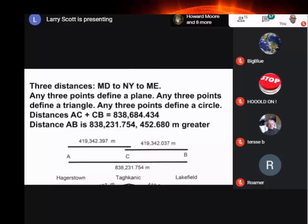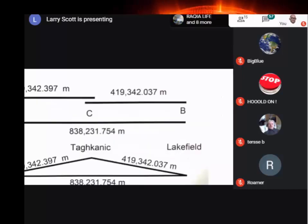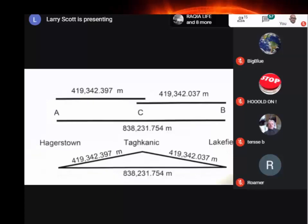The distance from Alpha to Charlie, Charlie to Bravo, added together are longer than the simple distance of A to B. By 450 meters. 450 out of 838,000, it doesn't sound like a lot. Actually, it is. And when you take those three lengths, you end up building a triangle. And so we've got Hagerstown, Tachanek, and Lakefield. Notice the triangle.